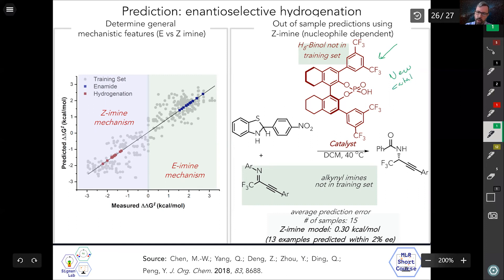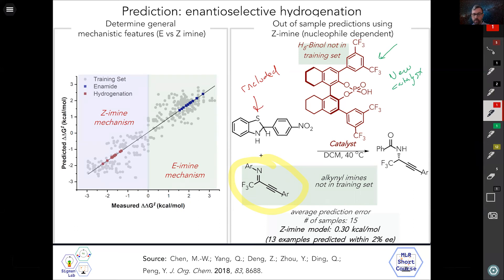Here's an example where we did not have this in our training set—this is a new catalyst. We didn't have this type of imine, this alkynyl imine, in our training set. We do have—this is included in our training set. But taking two new components, we actually can predict with reasonably high prediction—13 examples of a paper that was published just very recently in 2018, where we only get 2% error in enantiomeric excess for 13 examples. So that's rather exciting.